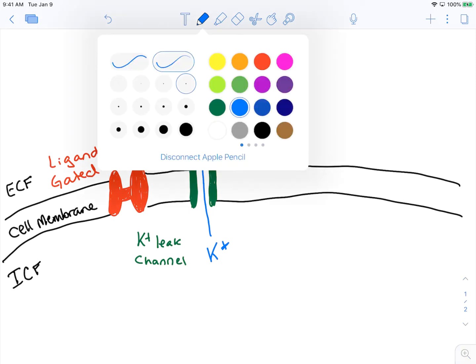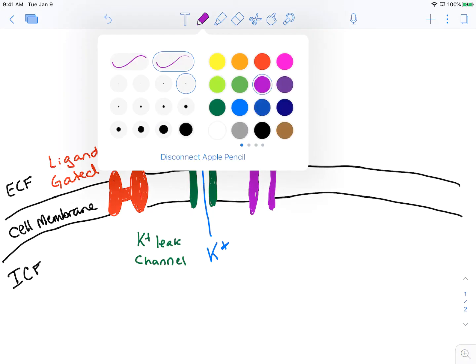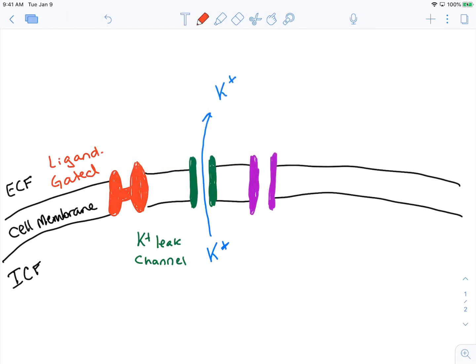We also will have these other channels. Here we're going to draw in purple a sodium leak channel. Like the potassium leak channel, it has a probability of being opened and closed. It's going to drift open and drift closed, a little bit random. But at any given time there's going to be at least some of these leak channels open, and these will allow sodium to leak into my cell.